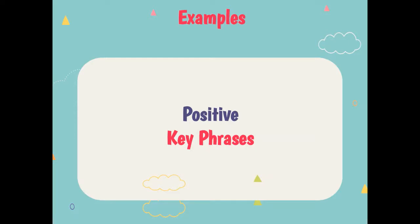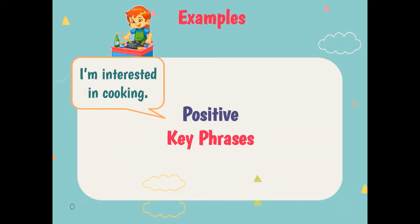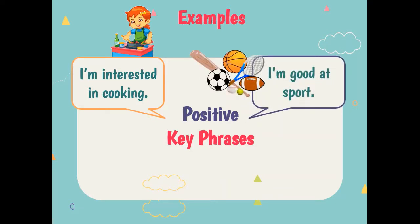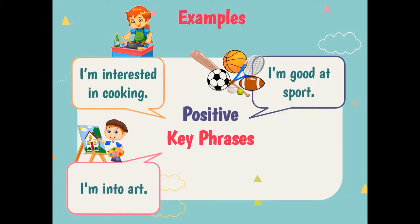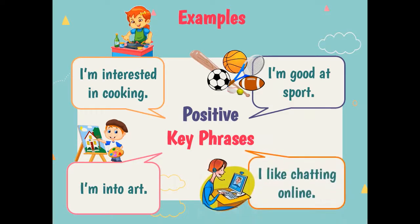Here are some examples on how to talk about hobbies and interests using the positive key phrases. Remember, positive phrases are for something that you like or love to do. Let us see the examples. I'm interested in cooking — it means that you like cooking, you love cooking. I'm good at sport.